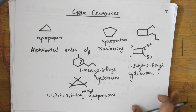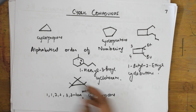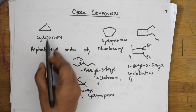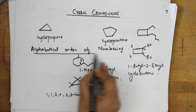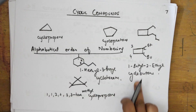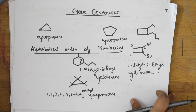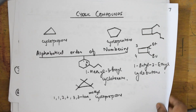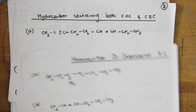So this is how you number cyclo compounds. If there are no substituents, you directly number the ring. If there are substituents, you follow alphabetical order for naming and numbering.